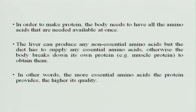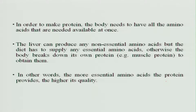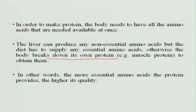In order to make protein, the body needs to have all the required amino acids at a single time. The liver can produce non-essential amino acids — it can synthesize them in the body — but the diet must supply all 9 essential amino acids, which we saw in the last class. Otherwise, the body breaks down its own protein, for example muscle protein, to obtain them — that is called muscle wastage. Whenever an individual has fever and does not take food, the energy supply is insufficient, so the body breaks down its own protein, which is why the person becomes very lean at the end of the episode of fever.